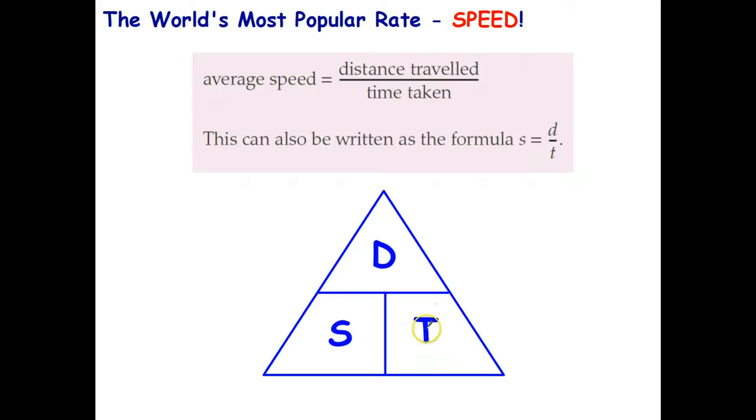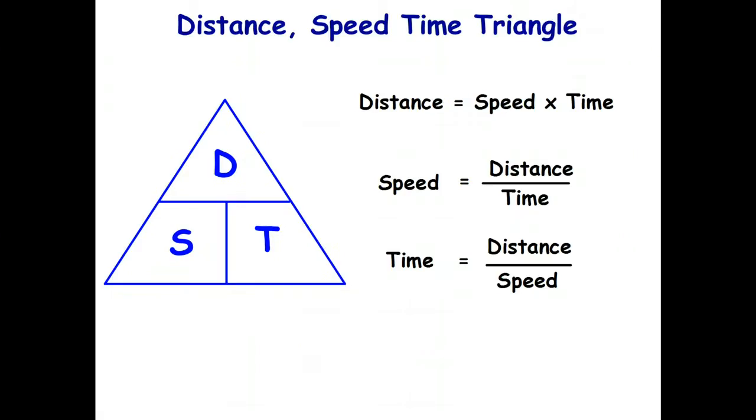And notice that we can actually do a triangle for this, just like the percent triangle that I use when I'm teaching percentages. We can say distance equals speed times time, speed is distance divided by time, which is this formula, or time is distance divided by speed. So it doesn't matter which of those three quantities you're trying to solve—you can always find it if you know the other two. And there's our three formulas that I just talked about.